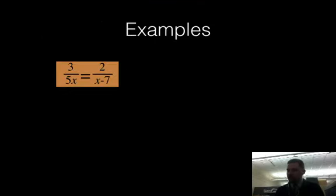Let's go on and look at some examples that we'll have to deal with in this section. If I have 3 over 5x equals 2 over x minus 7, this is a situation where I can cross-multiply. There's really two situations that we deal with. The first one is cross-multiplication. The second one is more complex problems.